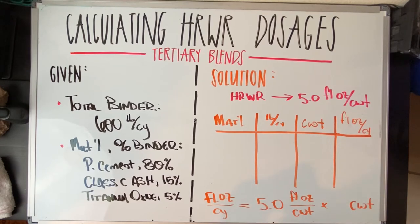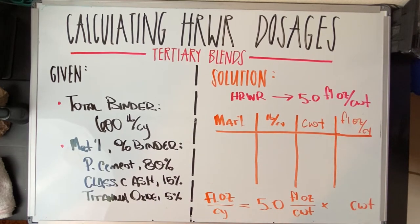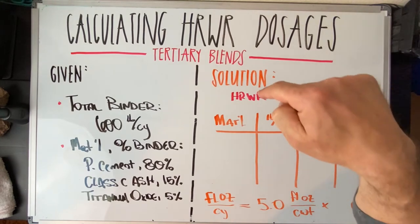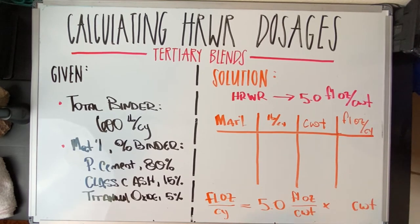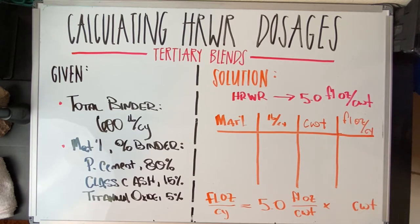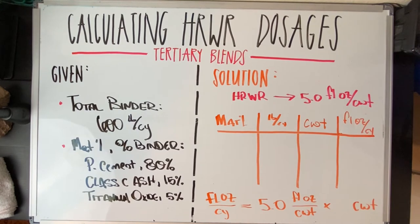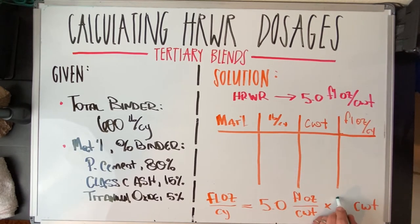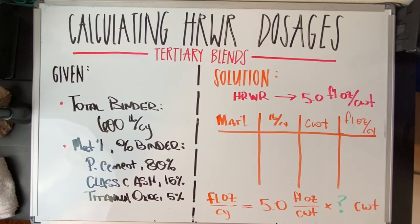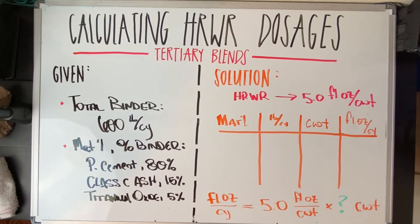So let's dive into it. We're going to separate our binder into three different types and then we're going to use the same high-range water reducer to calculate the change in fluid ounces per cubic yard for each one of these different types of binder packages. We're using the same calculation: 5.0 fluid ounces per hundredweight, times the different hundredweights we'll have for these different types of binder packages. Let's get on with it — we'll start with the cement.